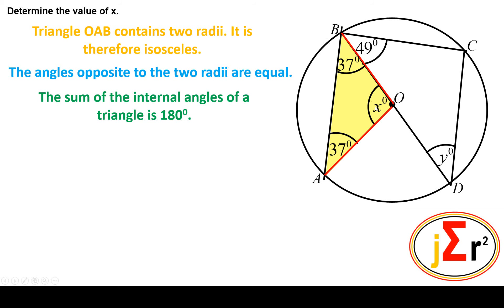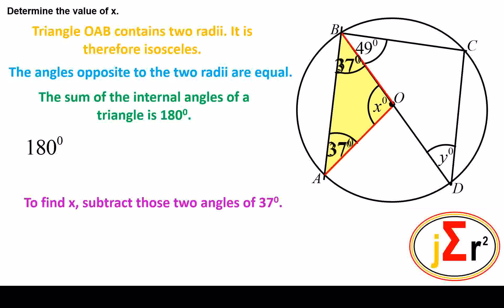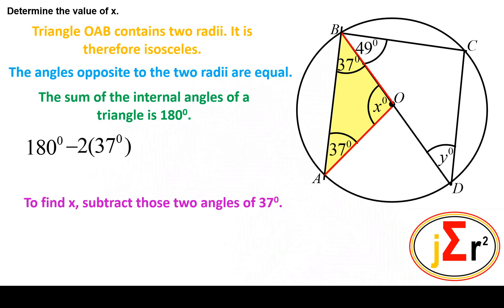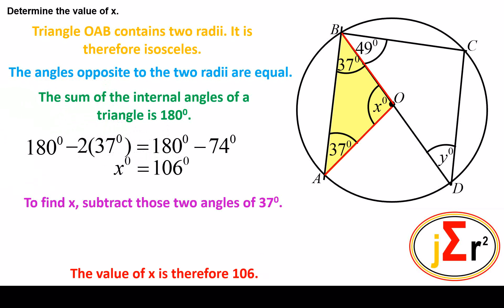To find x, we could subtract those two angles of 37 degrees from 180 degrees individually, but since both of them are equal we may say 180 minus 2 times 37. The result is 180 minus 74 degrees, and that is equal to 106 degrees.